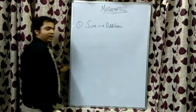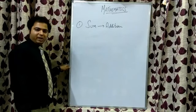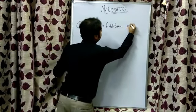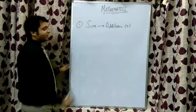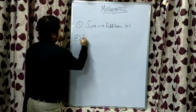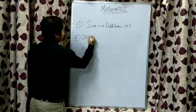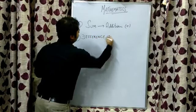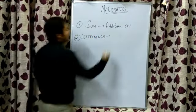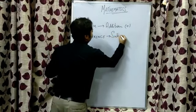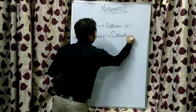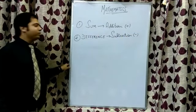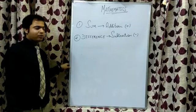First, children get confused about sum with multiplication. So don't get confused — sum means addition and the symbol for sum is plus. Second one is difference, D-I-F-F-E-R-E-N-C-E. Difference basically means subtraction and the symbol is minus. Children basically get confused between difference and division, and that's wrong.